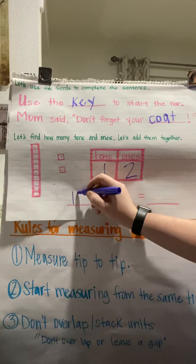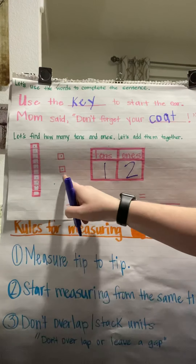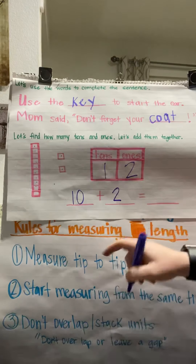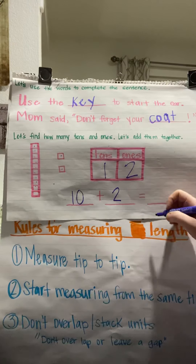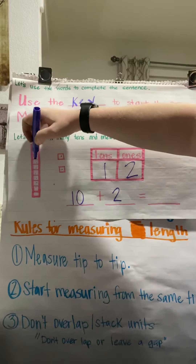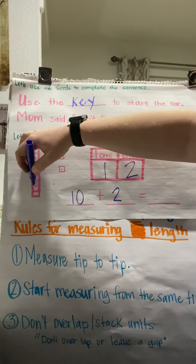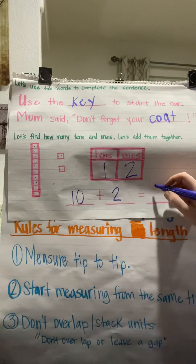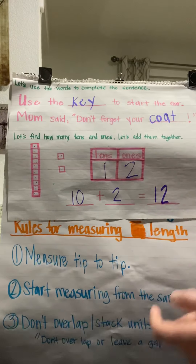The first part was 10, and then the second part — how many did we have? 2. And 10 plus 2 equals 12. Let's count them: 1, 2, 3, 4, 5, 6, 7, 8, 9, 10, 11, 12. We were right! Awesome job, you guys.